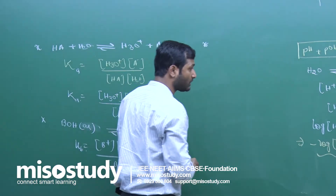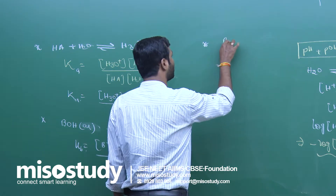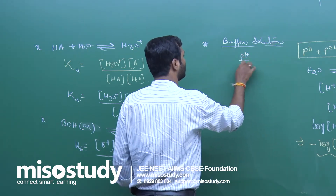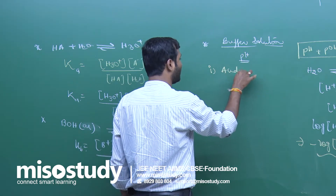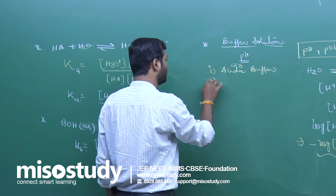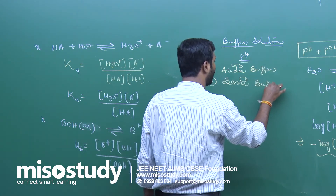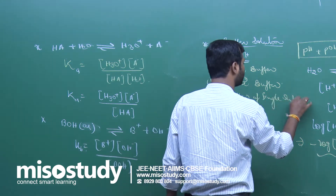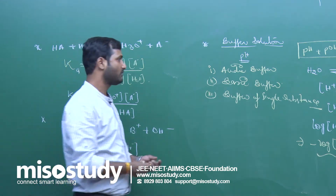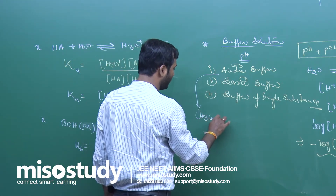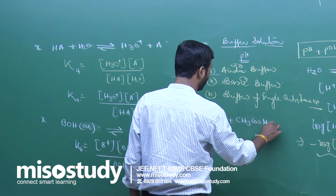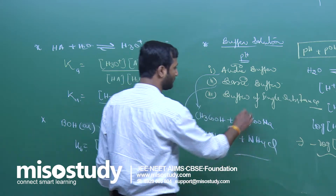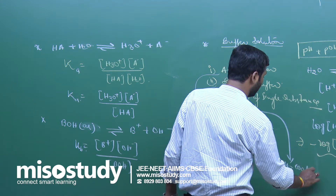Now we have the Ka times Kb relation, and then we have buffer solution — the type of solution which resists any change in pH. We have two general types of buffer: first, acidic buffer; second, basic buffer; and third is buffer of a single substance. Acidic buffer is a weak acid like CH₃COOH and salt of weak acid and strong acid. Basic buffer is weak base and salt of weak base and strong acid like NH₄⁺. Buffer of a single substance is salt of weak acid and weak base, like CH₃COONH₄.